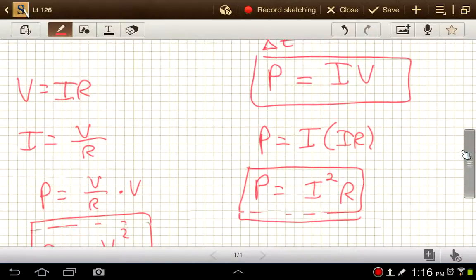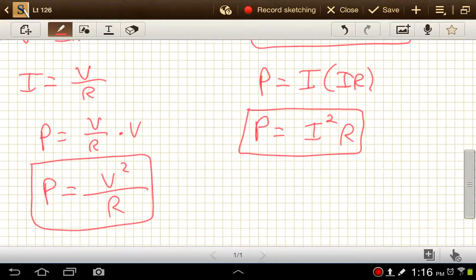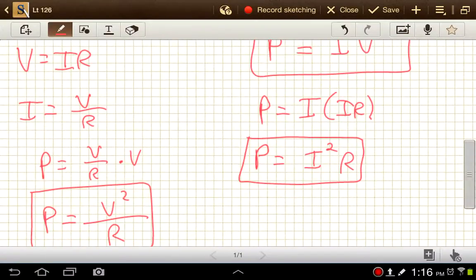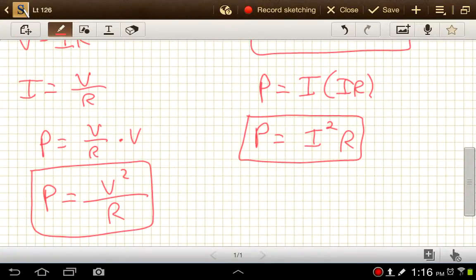Now, I notice on the AP equation sheet, this equation is given to you, and Ohm's law is given to you, but these two forms down here, these ones are not given. So it's definitely worth reviewing this derivation, how we get from having these two equations, to how we combine those, to get these two forms. Because you may be asked to find power, but not given, say, voltage. You have to use this equation. Or maybe you're not given current, and then you have to use this equation. So definitely be sure to review that.